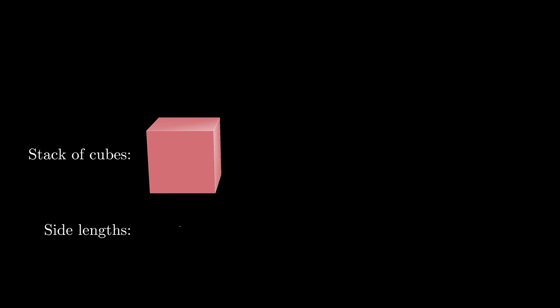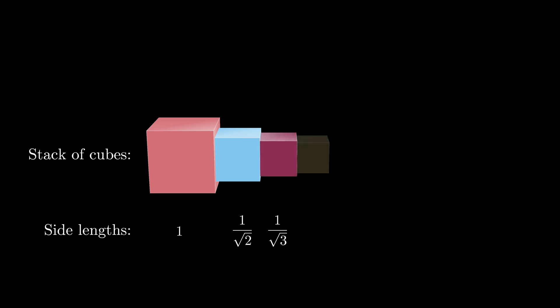Consider an infinite stack of cubes where the side lengths decrease starting with 1 followed by 1 divided by the square root of 2 followed by 1 divided by the square root of 3 and so on. In this stack, the i-th cube will have a side length of 1 divided by the square root of i.